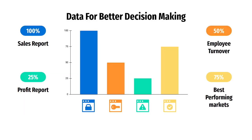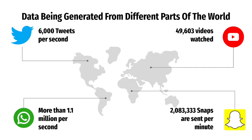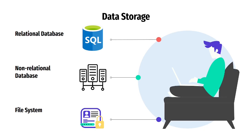Data can help companies make better decisions — generating sales reports, employee turnovers, best performing markets, and stuff like that. A lot of data is generated every minute and every second. For example, there are 6,000 tweets generated per second, over 50,000 videos watched on YouTube, over 1.1 million chats on WhatsApp per second, and over 2 million snaps being sent on Snapchat every minute.